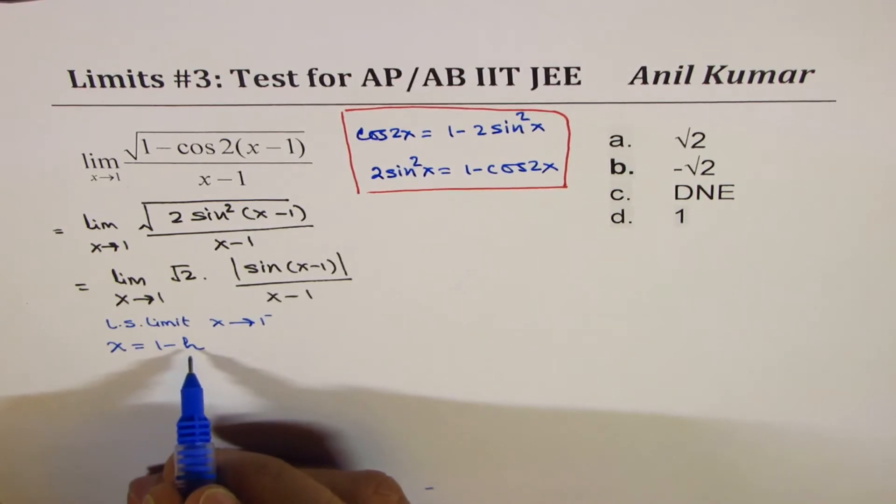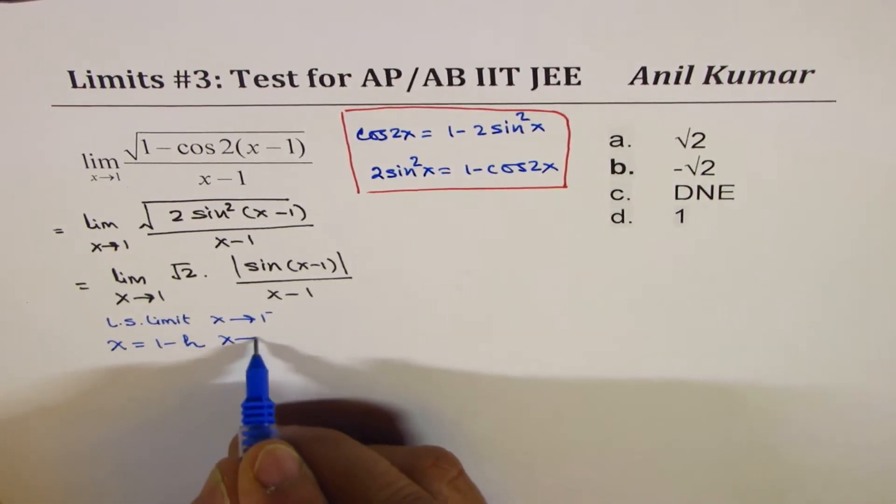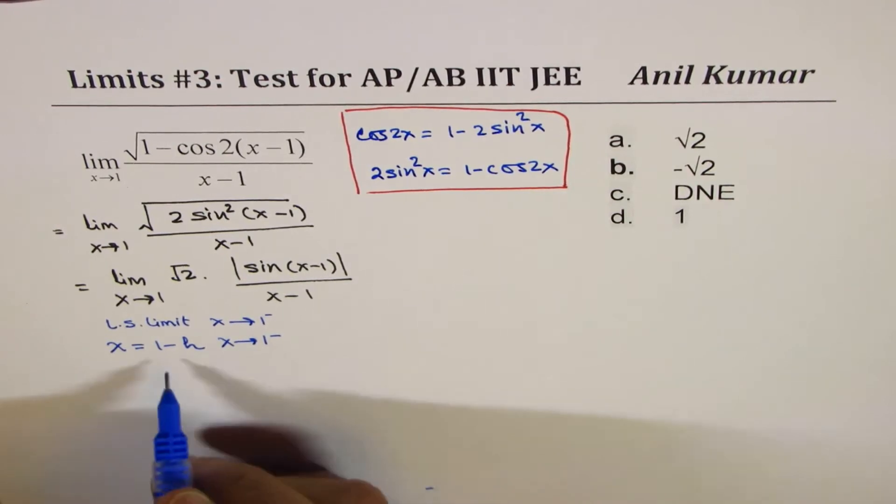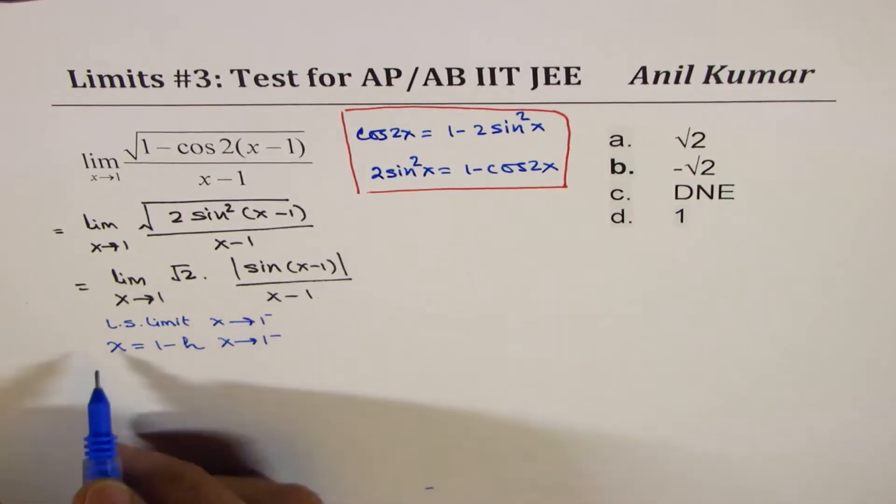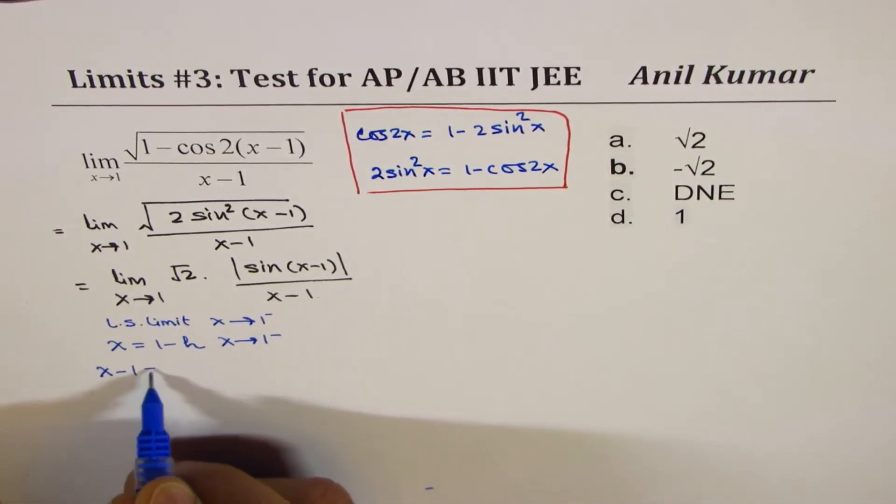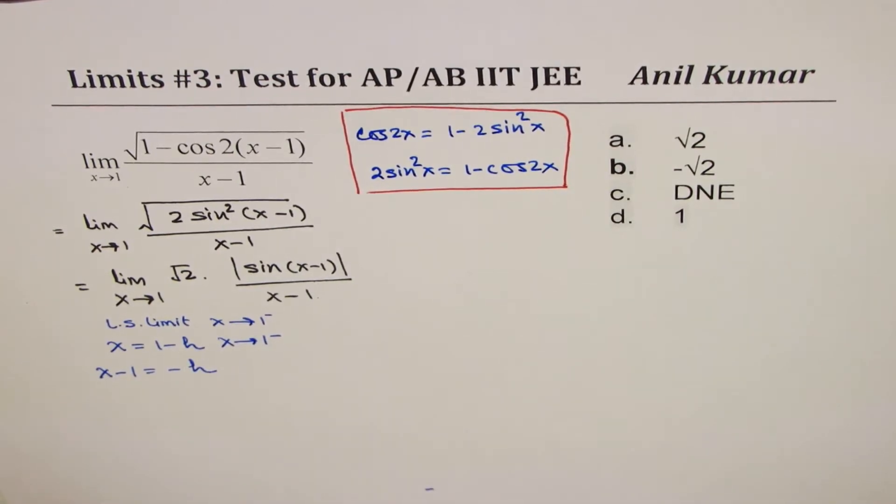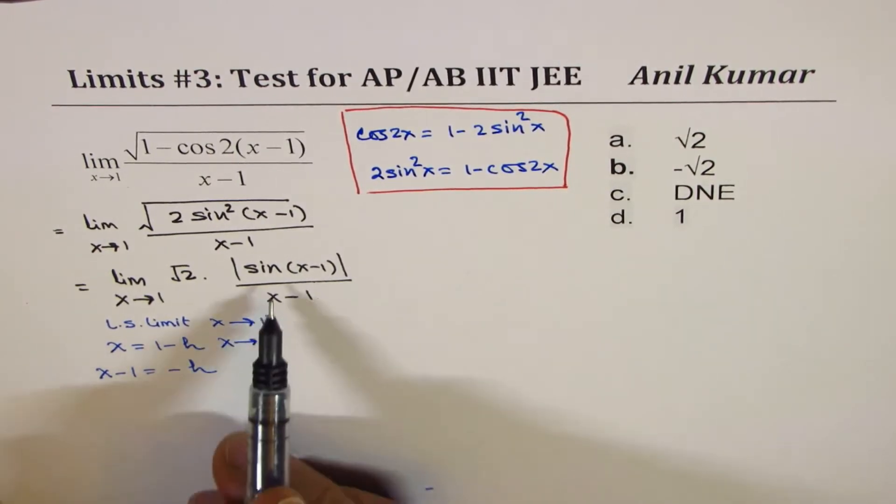So that is approaching from left side, which is x approaching 1 from the left side. So in that case, what is x minus 1? x minus 1 is minus h. Do you see that?